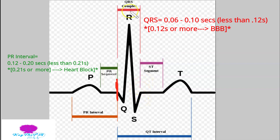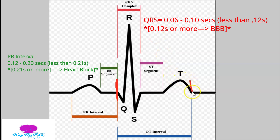Now we measure our QT interval. We start at the Q and end at the end of the T wave. The QT interval is typically less than 0.44 seconds — between 0.35 and 0.44 seconds is considered normal.